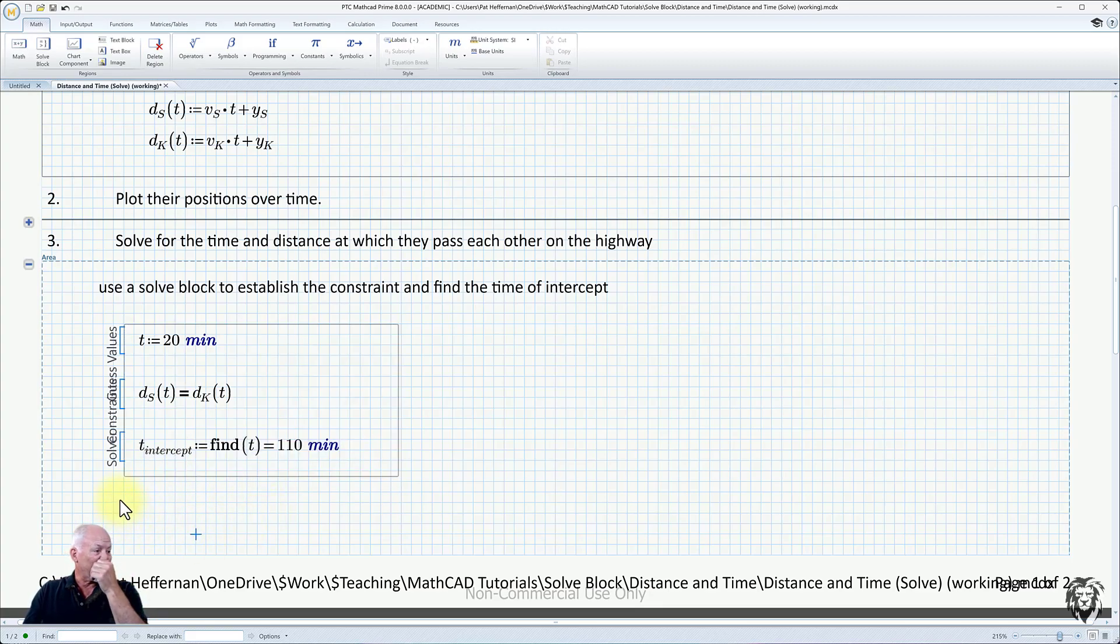Just to have some fun, now you can use t_intercept as a variable moving forward. If you wanted to know what that position is, we can say what is Siobhan's position at t_intercept. We can use it as a variable and hit equals and put that in kilometers. We know that it's roughly 229 kilometers down the highway that she's going to get there. If you're interested, you can check Keegan's distance d_k at t_intercept. If this is working, it should all be the same. And equals kilometers. We see, lo and behold, it's the same because that's what the solve block was determining.